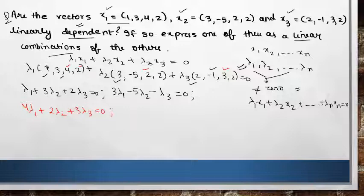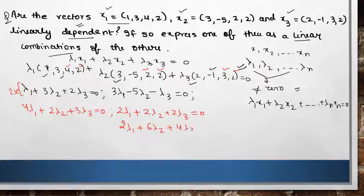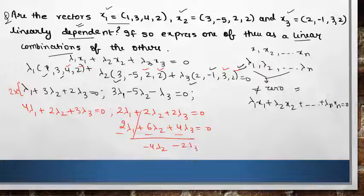4 lambda 1 plus 2 lambda 2 plus 3 lambda 3 equals 0. And the fourth equation would be 2 lambda 1, 2 lambda 2 and 2 lambda 3. If you solve these, let's multiply by 2: 2 lambda 1 plus 6 lambda 2 plus 4 lambda 3. You deduct, 6 minus 2 is 4. So 2 lambda 2 becomes equal to lambda 3. Lambda 3 is minus 2 lambda 2.